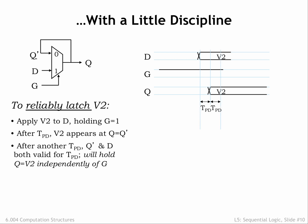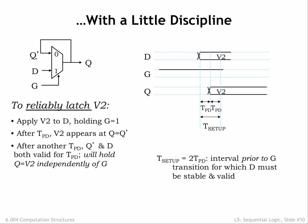Now we wait another TPD so that the information about the new value on the Q input propagates through the internal circuitry of the latch. Now both D and Q have been stable for at least TPD, giving us condition 2 from the previous slide. So if D is stable for 2 times TPD, transitions on G will not affect the Q output. This requirement on D is called the setup time of the latch — it's how long D must be stable and valid before the high to low transition of G.